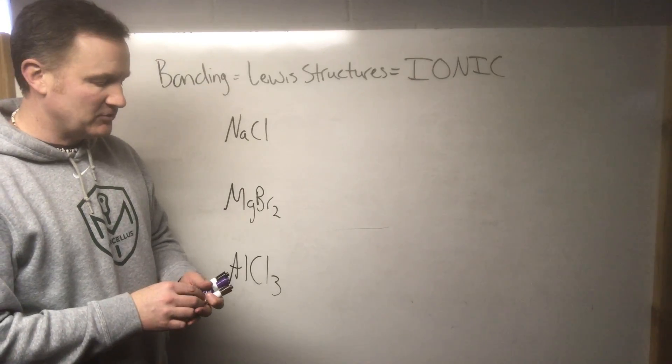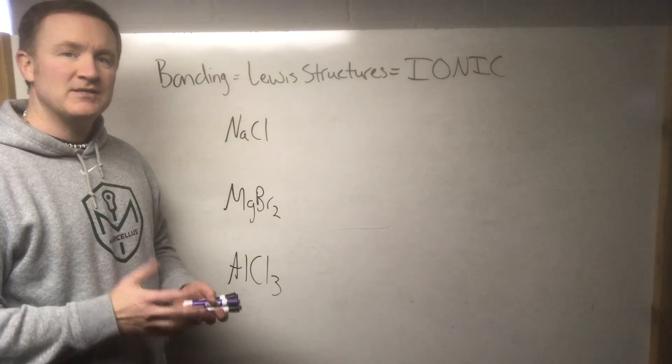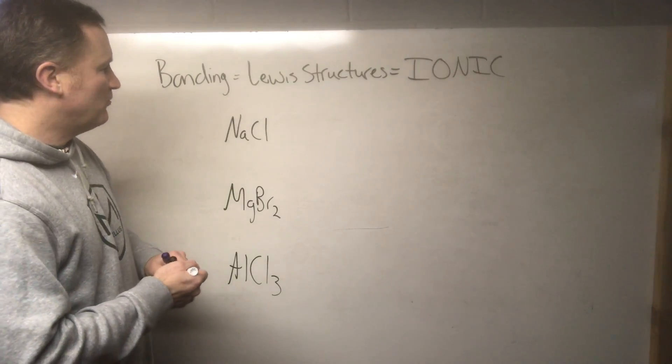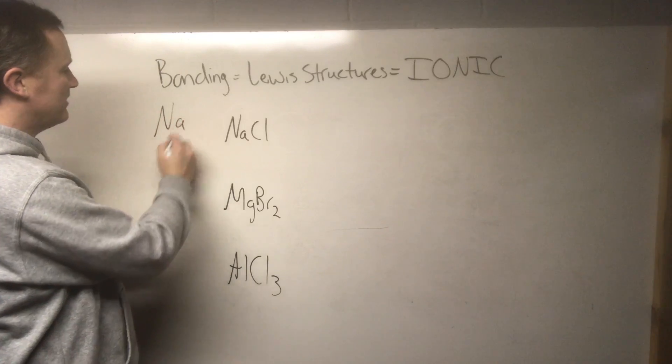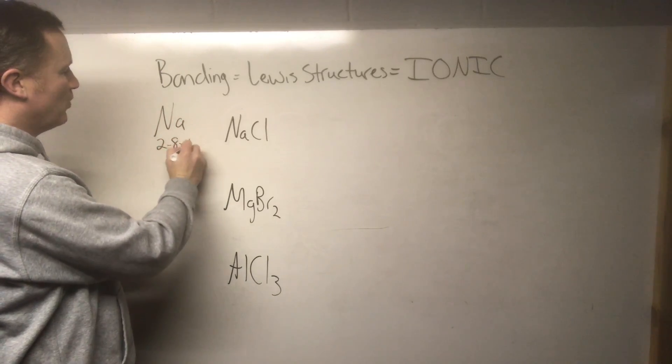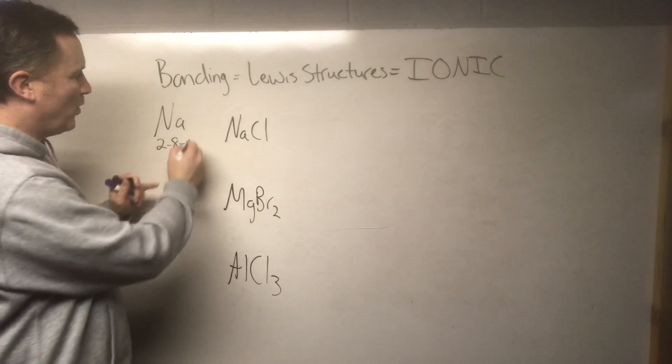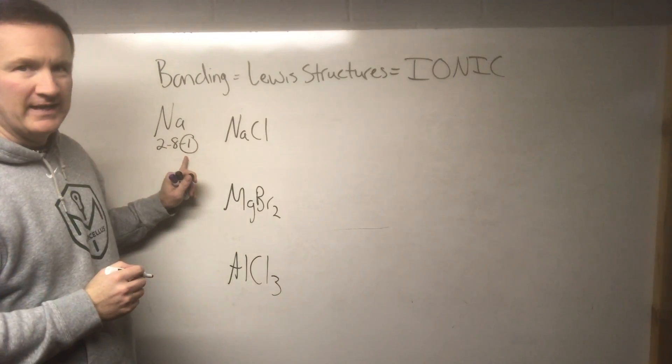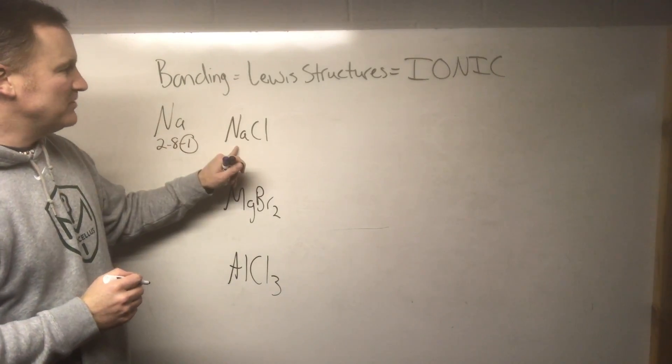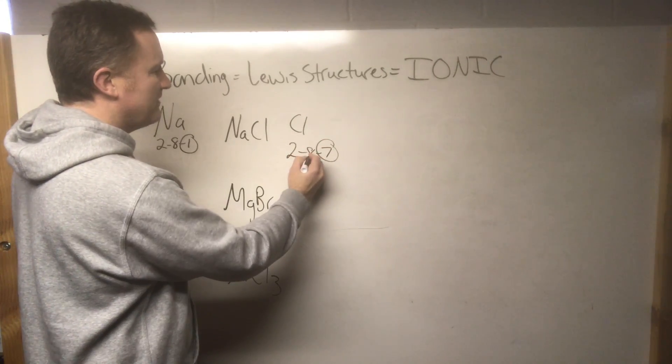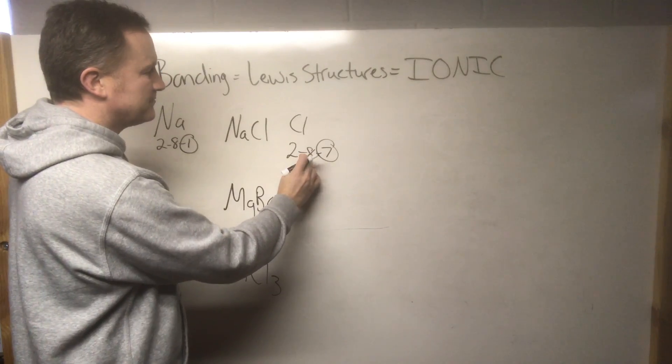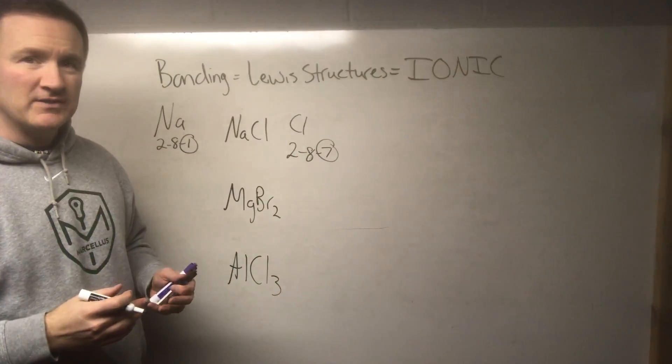You do need to use your reference table and become familiar with the electron configuration, specifically valence electrons. For example, on the periodic table if you were to look up sodium, sodium is 2-8-1, and that one is what we're really focusing on here. Chlorine would be 2-8-7, and it's the seven that we're focusing on in regards to the valence electrons.